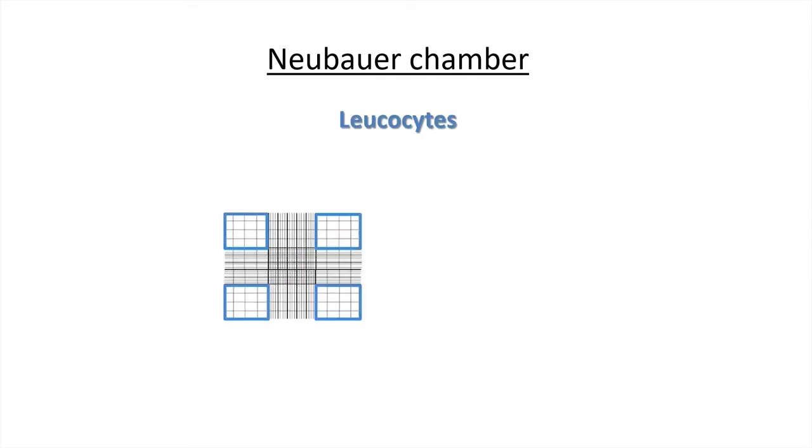The side squares will be used for the leukocyte or white blood count. Each of them is divided into 16 small squares.